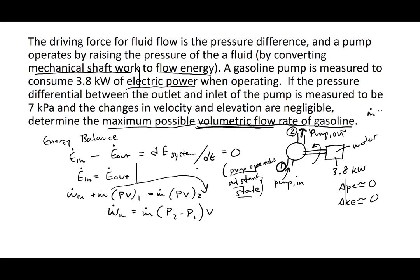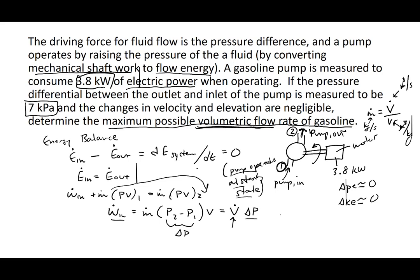The mass flow rate equals the volumetric flow rate divided by the specific volume. The volumetric flow rate is in meters cubed per second, and the specific volume is in meters cubed per kilogram, so the meters cubed cancel, leaving kilograms per second — the mass flow rate. Rewriting, work in equals V-dot times delta P. Solving for the volumetric flow rate: V-dot equals work in divided by delta P.